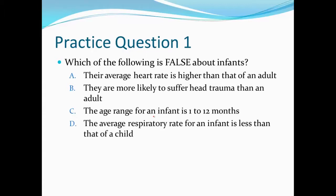Here's practice question number one: Which of the following is false about infants? Their average heart rate is higher than that of an adult. They're more likely to suffer head trauma than an adult. The age range for an infant is 1 to 12 months. And the average respiratory rate for an infant is less than that of a child.